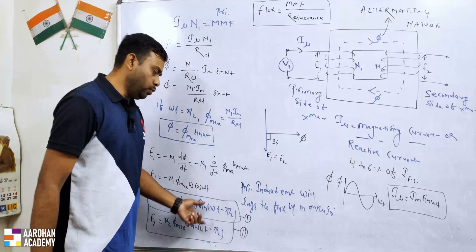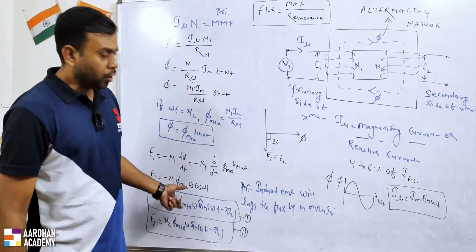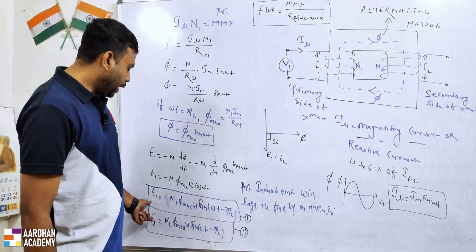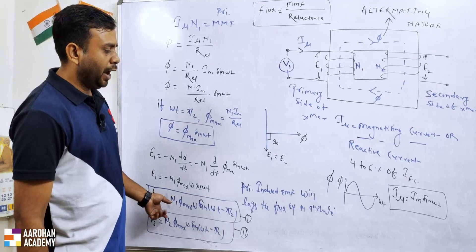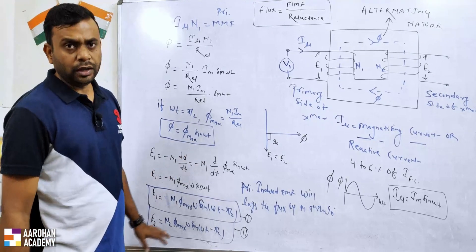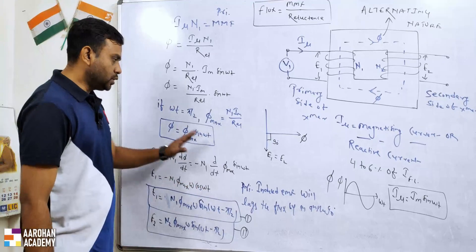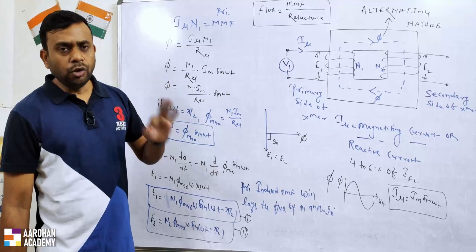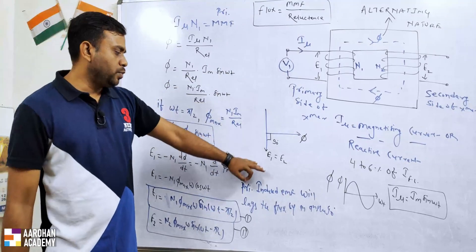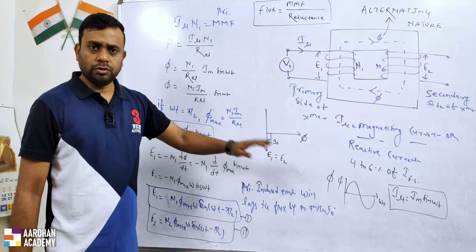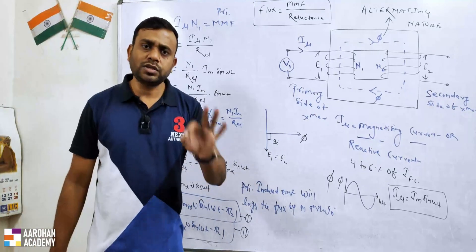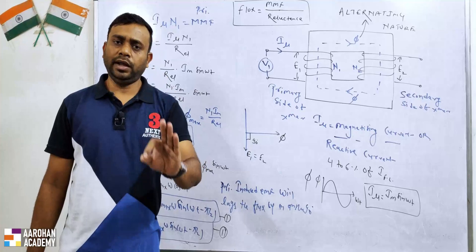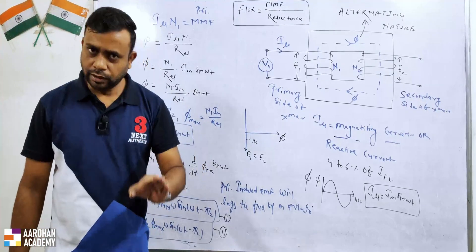This is a very important feature when drawing the phasor diagram of a transformer, and also an important competitive exam question: by how much does the induced EMF lag or lead the corresponding flux? The conclusion is that the induced EMF in the transformer lags behind the flux by an angle of 90 degrees.